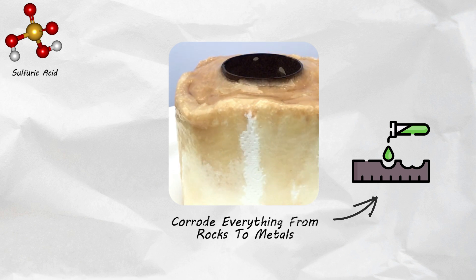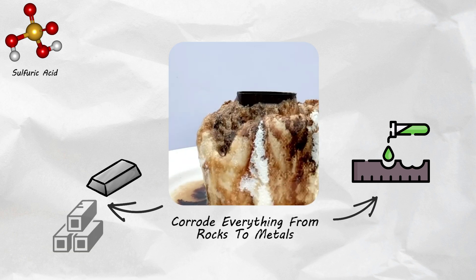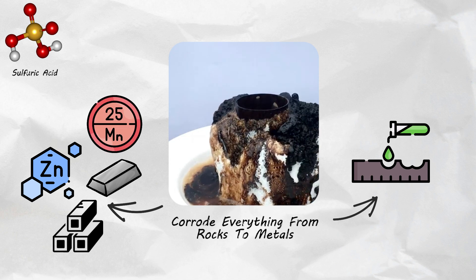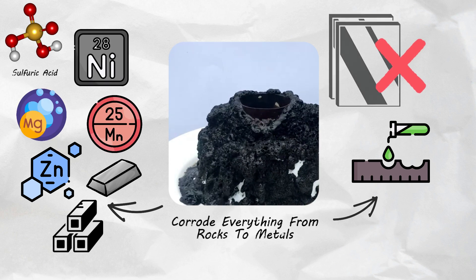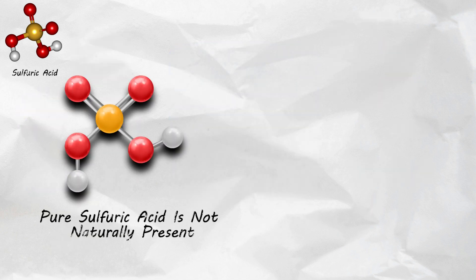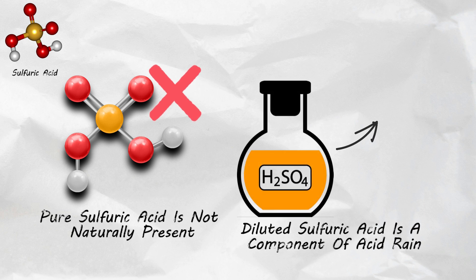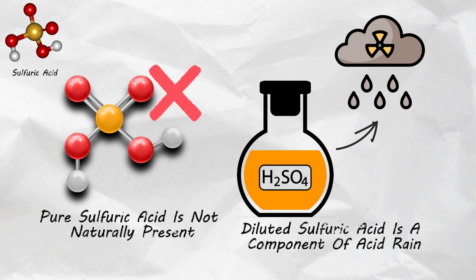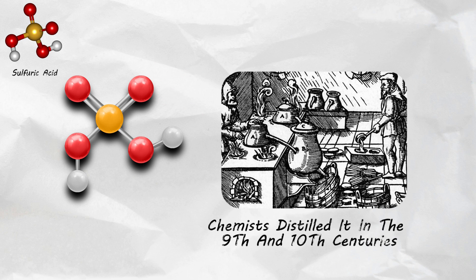Its aggressive nature is remarkable, corroding everything from rocks to metals such as iron, aluminum, zinc, manganese, magnesium and nickel, but not glass. Pure sulfuric acid is not naturally present, whereas diluted sulfuric acid is found as a component of acid rain. Historically, chemists experimented with its distillation in the 9th and 10th centuries, unaware of creating it.